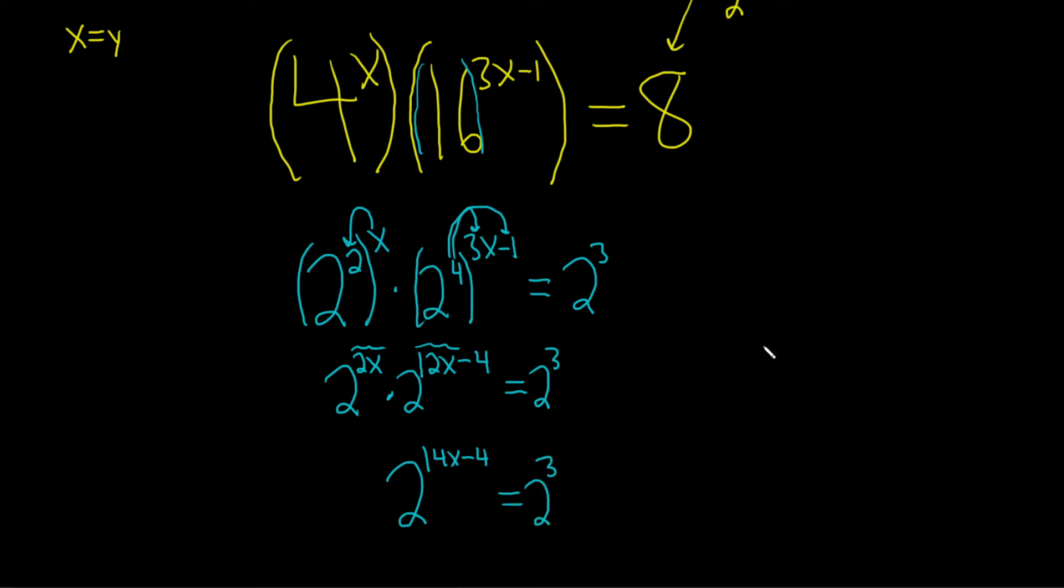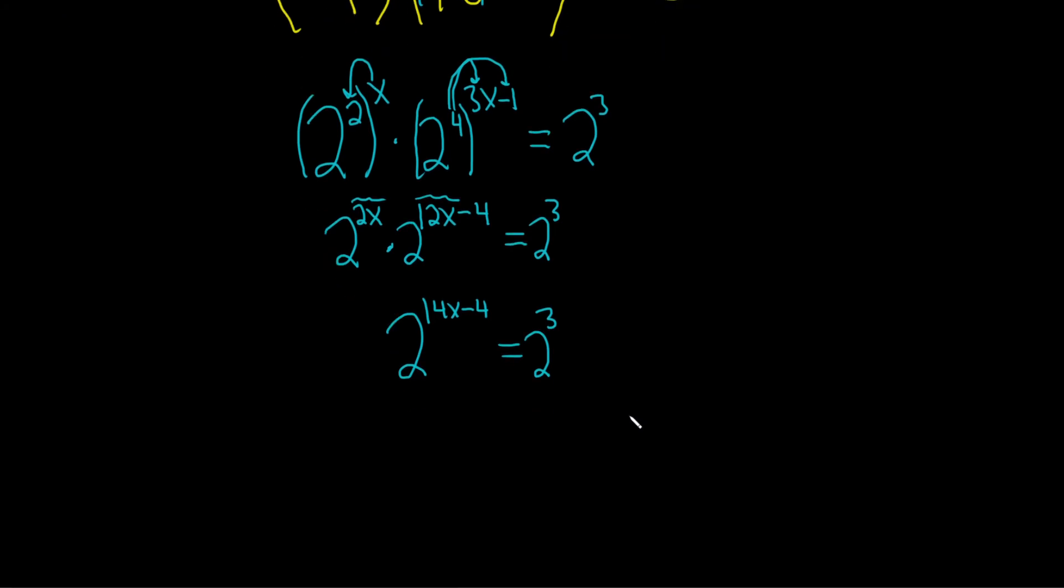And so now we're in that situation where the bases are the same. So we just drop the bases, and we set the exponents equal. So 14x minus 4 is equal to 3.